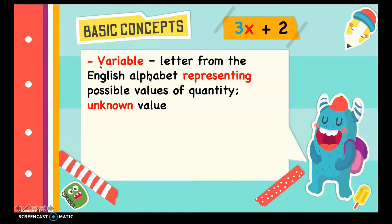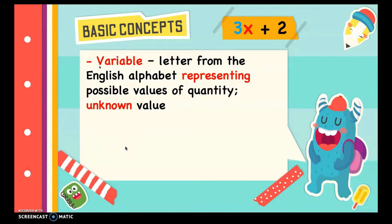A variable is a letter from the English alphabet representing possible values of a quantity, or it is the unknown value. You may write any letter of the alphabet if the value is unknown. In algebra, letters are often used to represent numbers. In 3x + 2, x is the variable — the unknown. Note that x here is no longer the multiplication symbol. For example, the number of flowers in the garden is represented by x, or the number of students in a class is represented by y.